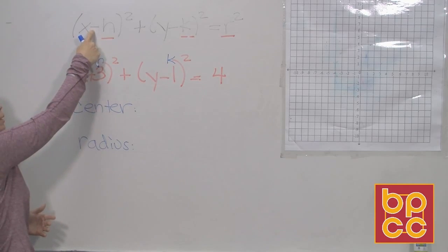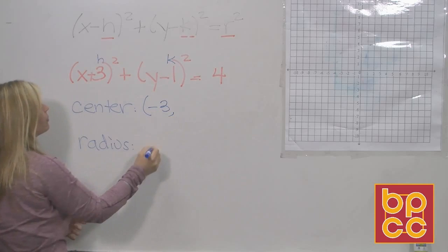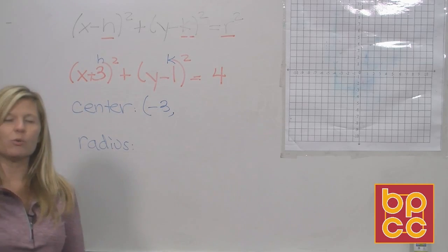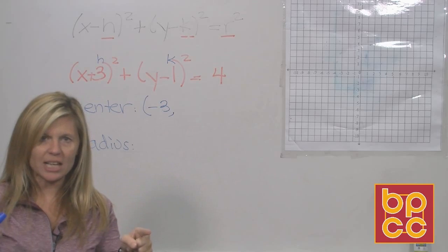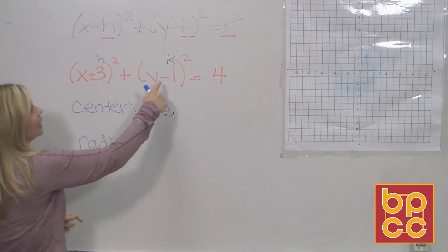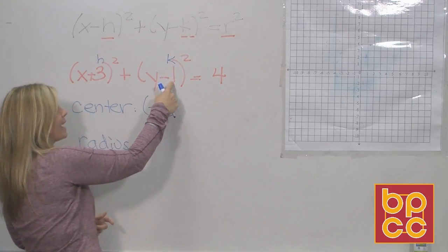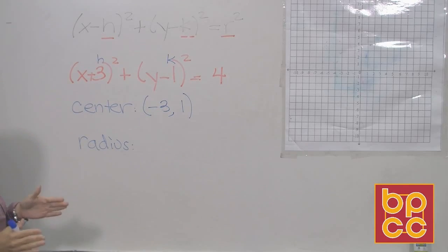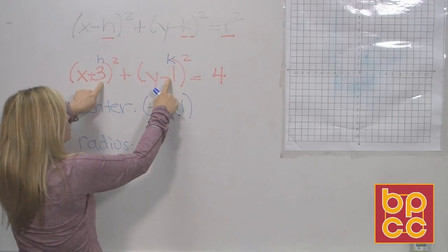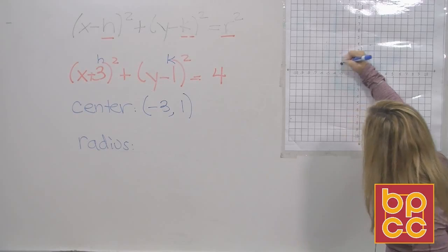The h value of the center is not what you see — it's not 3, it got changed. What would you put behind a minus sign that would change to a positive? It would have been a negative 3: x minus negative 3 makes the positive 3 that you see. The rule of thumb is when you give me the center, you don't give me the h and k you're seeing — you give me their opposites, their additive inverses. The k value looks like negative 1 but it's not — the opposite of what you see, so k is positive 1.